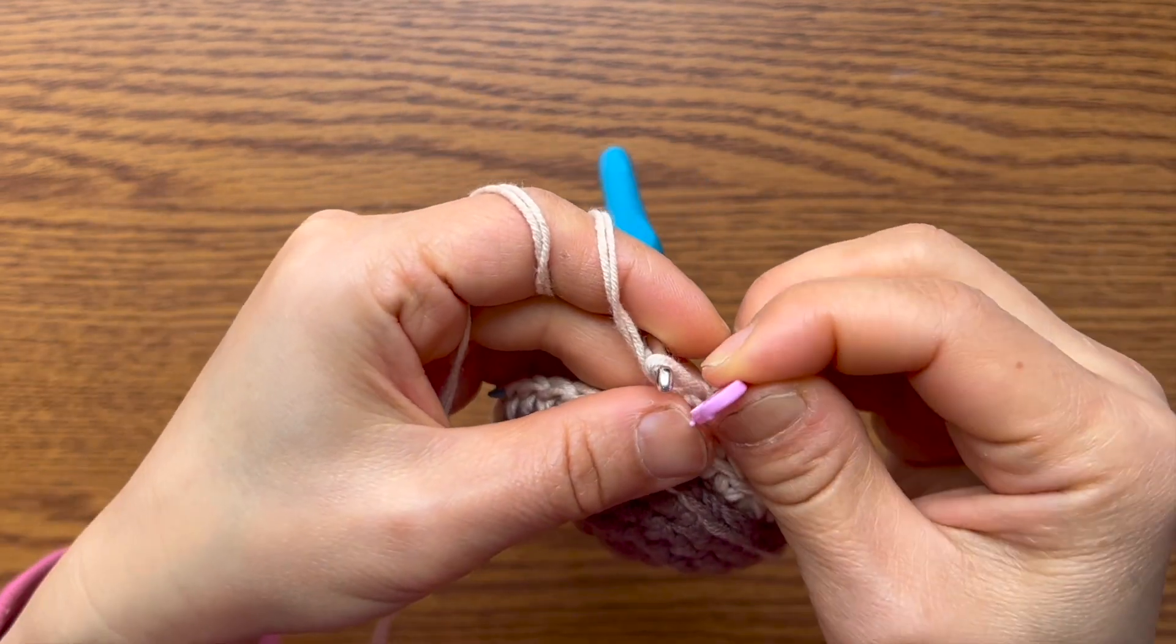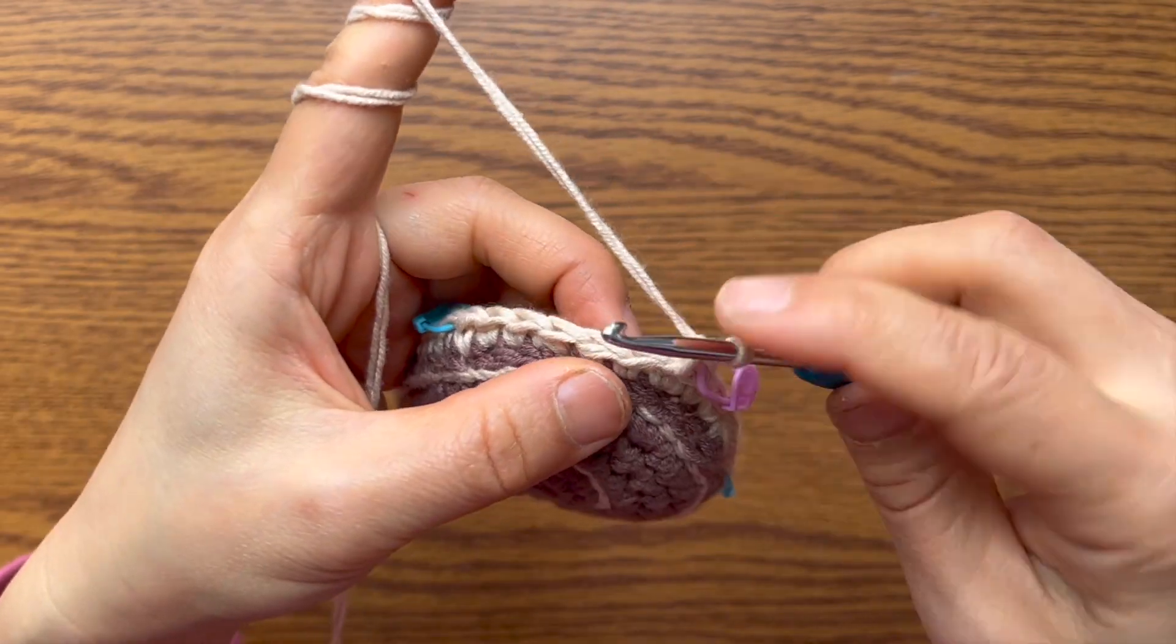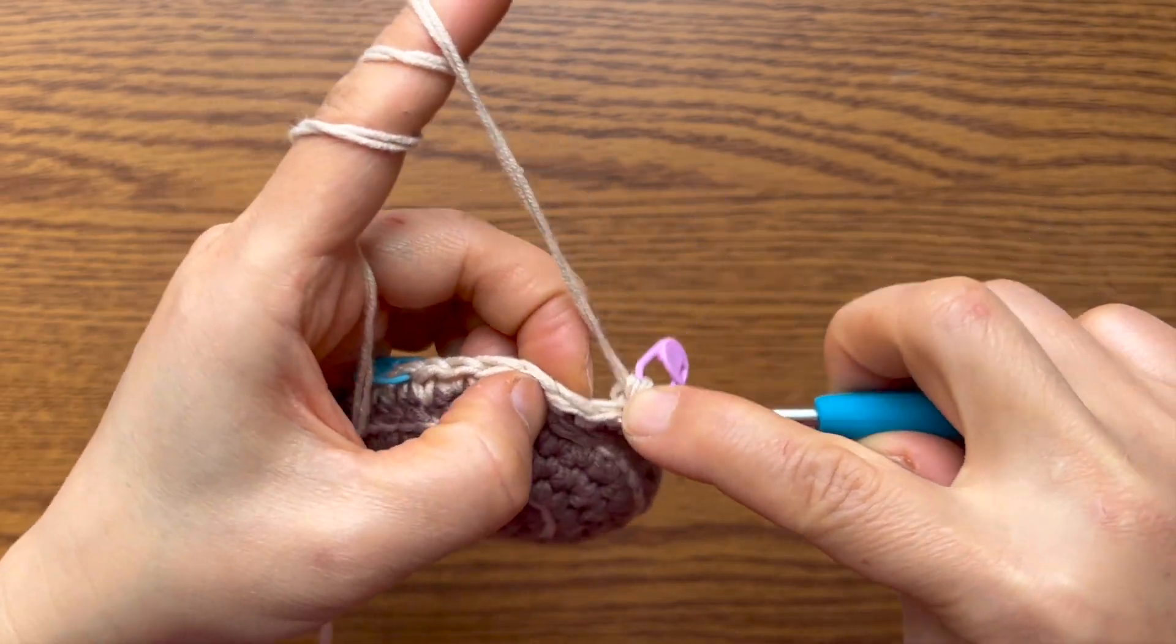The first round is simple. All single crochets except decreasing two stitches on the back. Same for the second round.